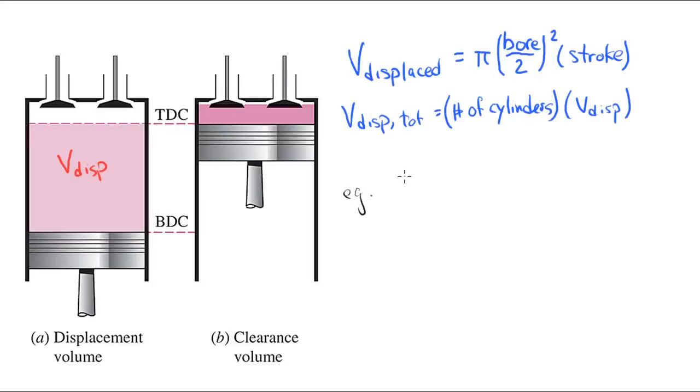So for example, if an automotive engine specifies that there's a 3-liter V6 engine, that means that the displacement volume per cylinder is 500 cc, or 500 cubic centimeters, which is half a liter.